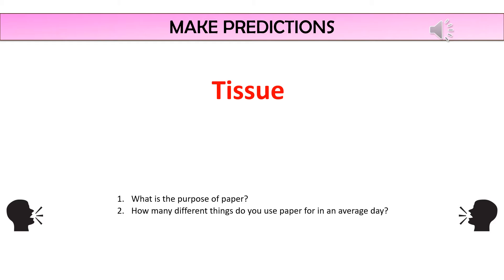Let's make a start. The first thing I'd like you to do is make predictions based on the title of the poem. Start thinking about what this word might mean to you — what do you think of when you see this word? There are a few questions on the slide to give you a prompt, such as: what is the purpose of paper? And how many different things do you use paper for in an average day? Once you're ready, move on to the next slide and we'll discuss some of your answers.